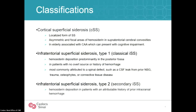There are different subtypes. Cortical superficial siderosis is a localized form — asymmetric, focal areas of hemosiderin in the supratentorial cerebral convexities. In the elderly it's often associated with CAA and can present with cognitive impairment. This talk is about infratentorial superficial siderosis. Type 1 is the classical form: hemosiderin deposition predominantly in the posterior fossa in patients with no overt source or history of hemorrhage, most commonly attributed to spinal defects such as CSF leak from prior neurosurgery, trauma, osteophytes, or connective tissue diseases. Type 2 is the secondary type, usually attributable to a history of prior intracranial hemorrhage.